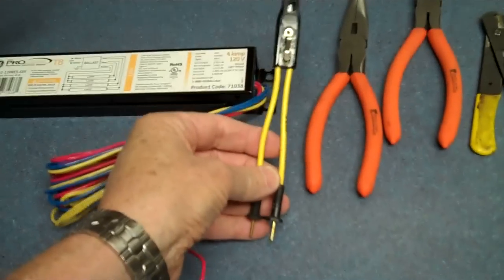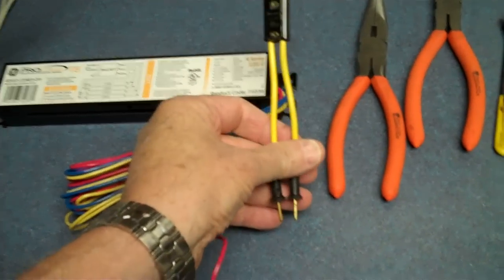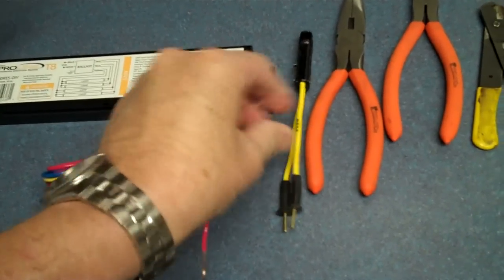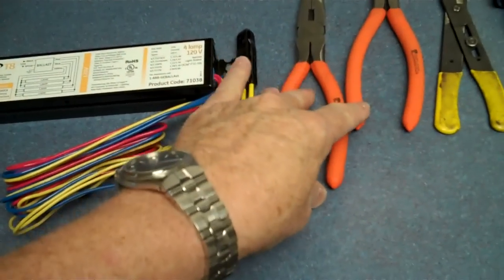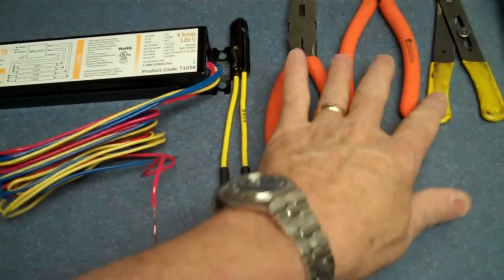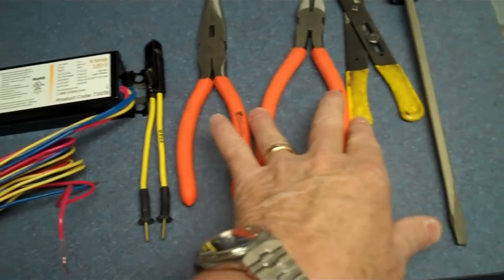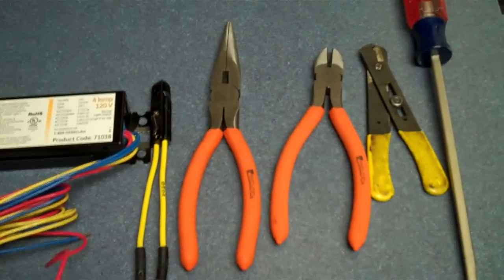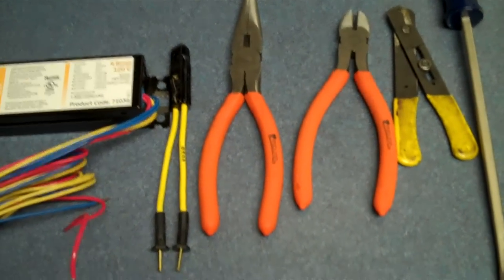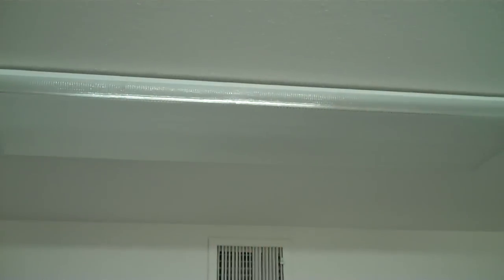You're going to need something to make sure that your power is not on. This is just a neon bulb tester, but you don't want to work with a hot power system. You want some wire cutters and snips and screwdriver, and you're also going to need something to strip the wires.